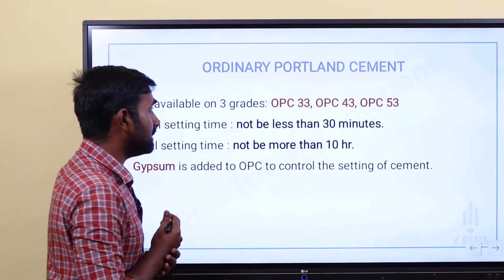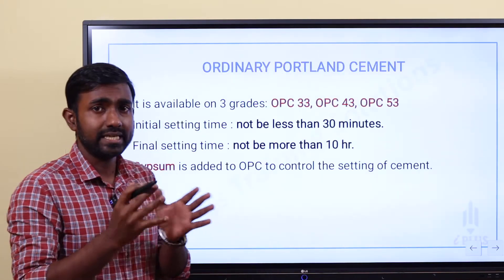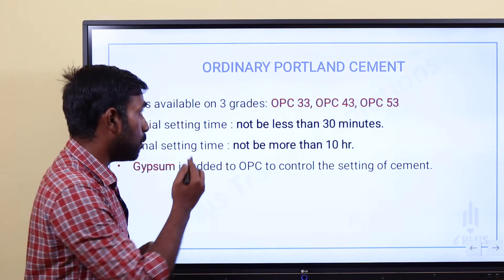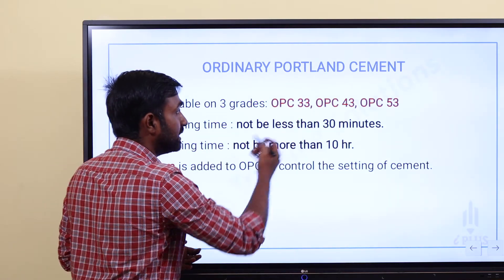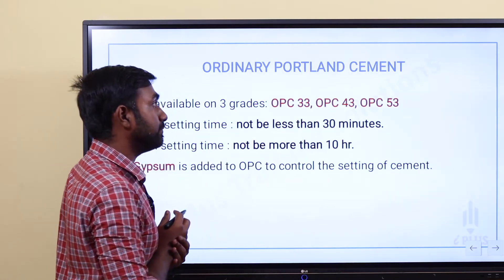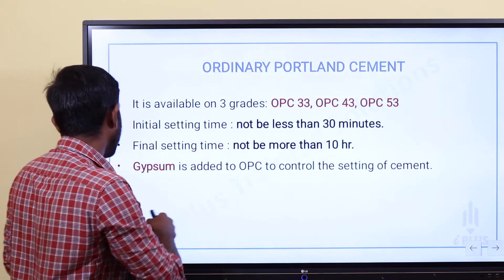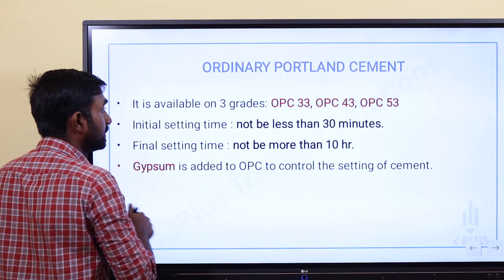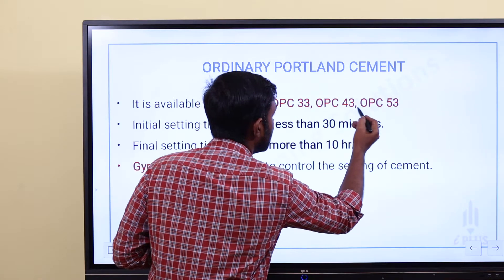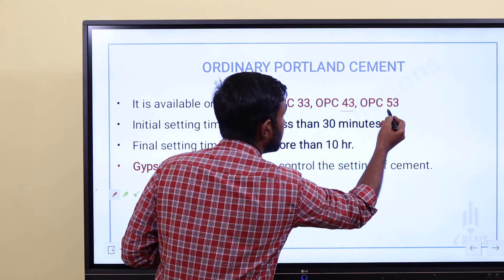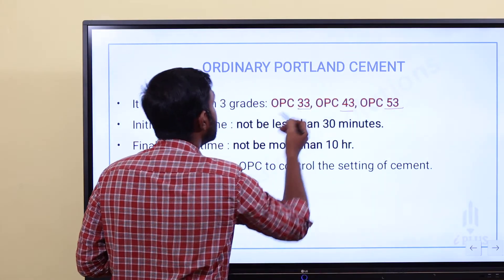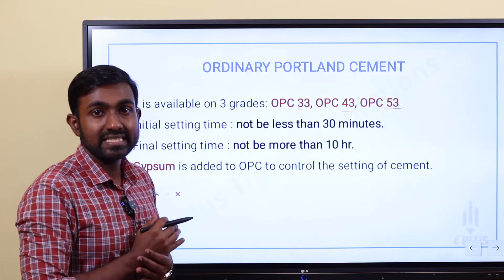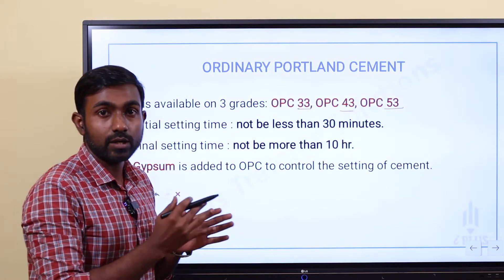Ordinary Portland cement basically has 3 grade categories available. That is OPC 33, OPC 43, and OPC 53. These 3 grades are the ordinary Portland cement grades available.